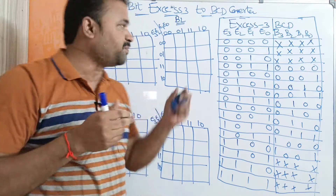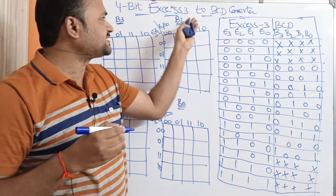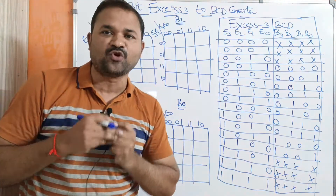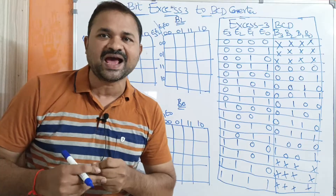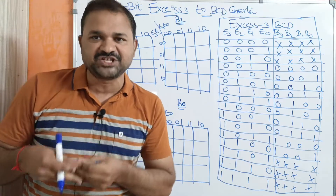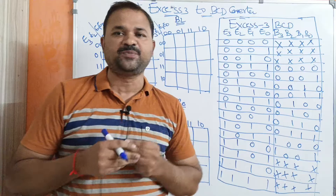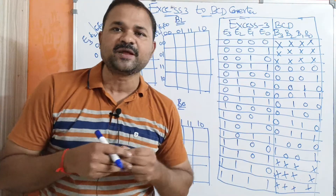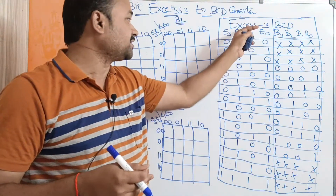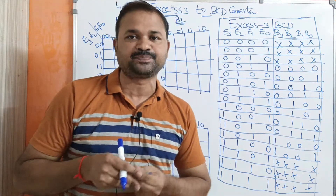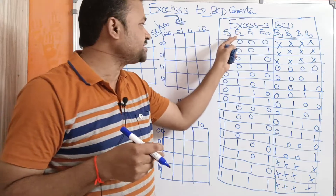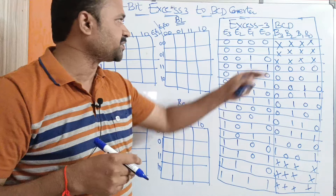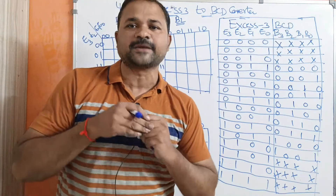Let us discuss about the 4-bit XS3 to BCD converter. Here the number has 4 bits, so totally we will have 2 to the power 4, that is 16 combinations. First, let us see the truth table. The truth table has 2 columns. The first column represents XS3 code. Here the input number is XS3, represented using 4 bits: E3, E2, E1, and E0.